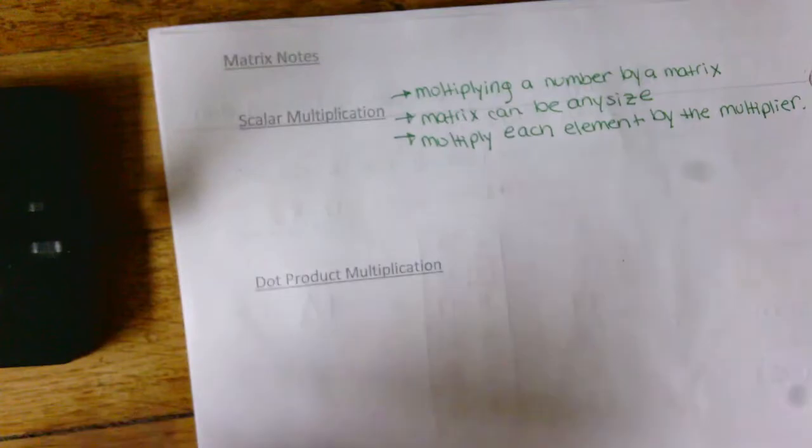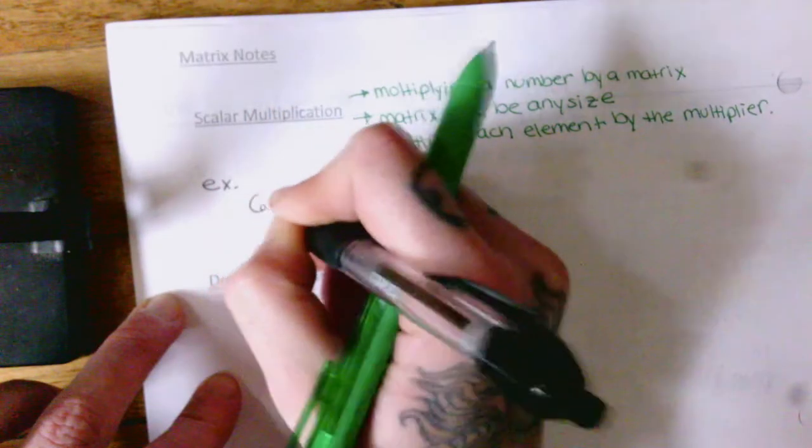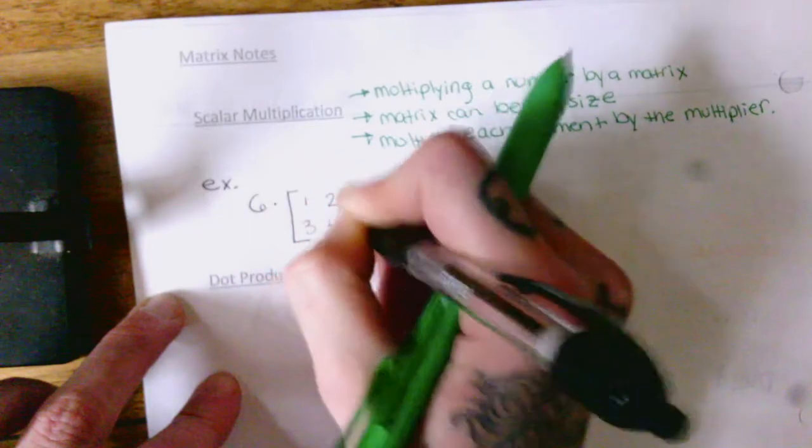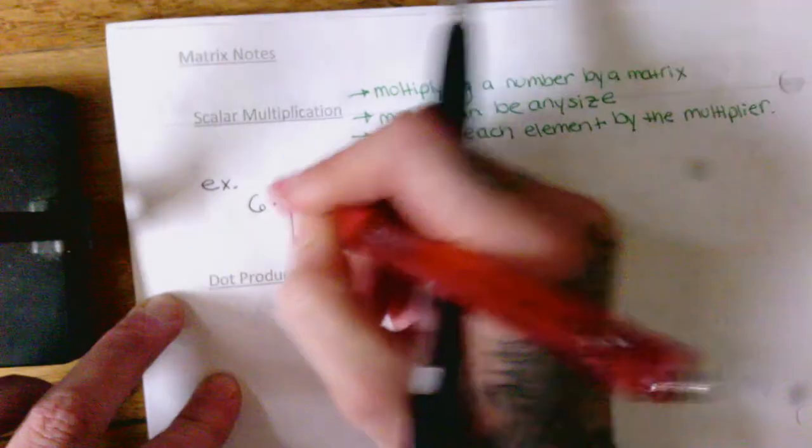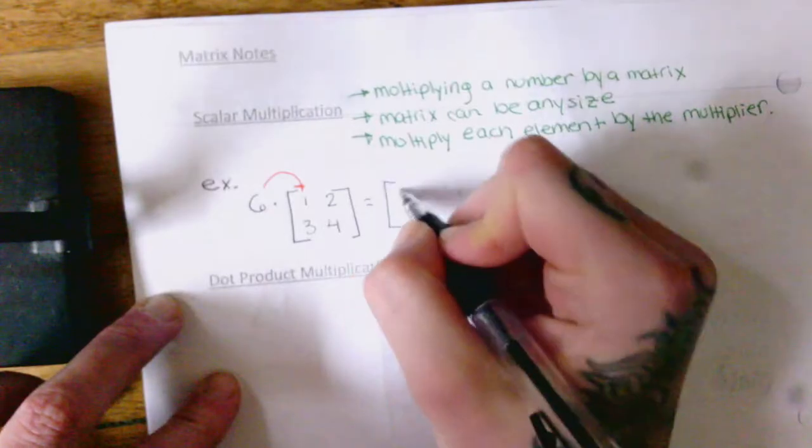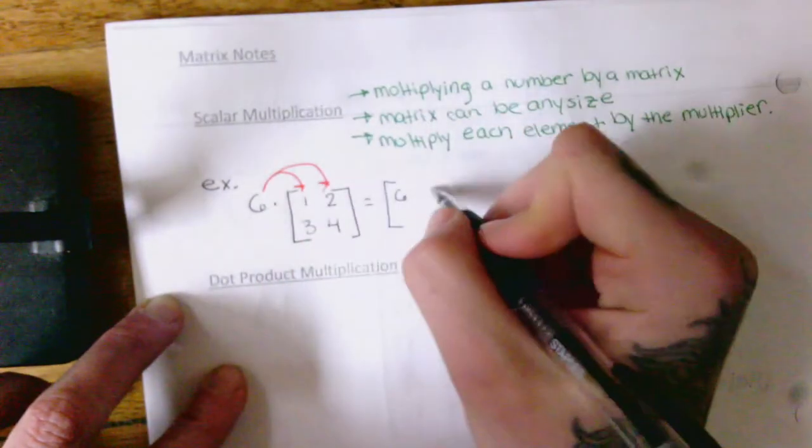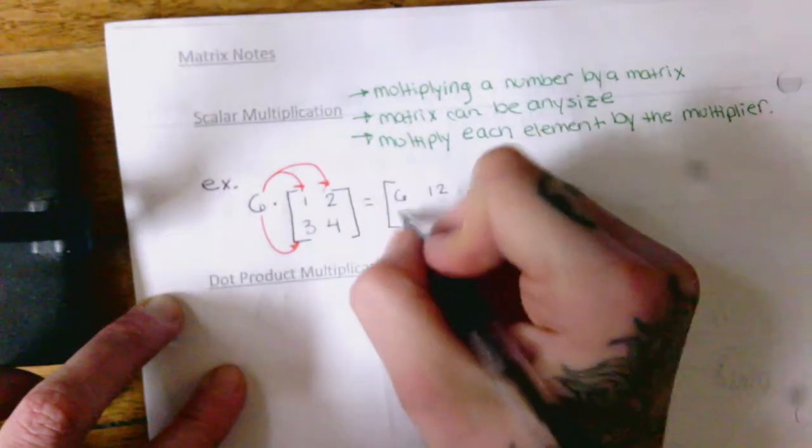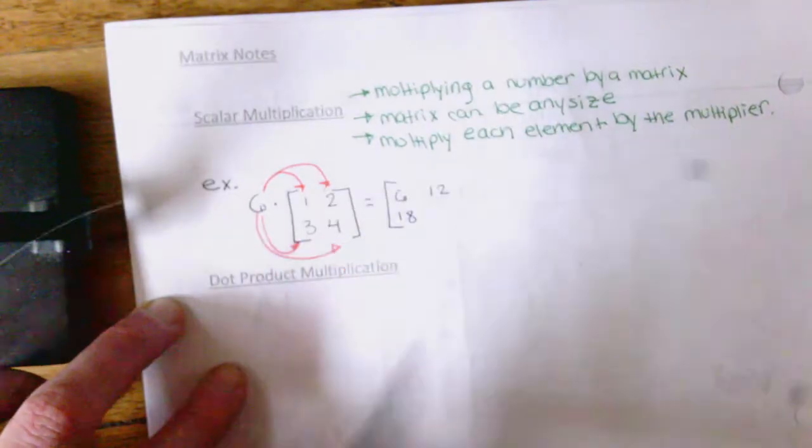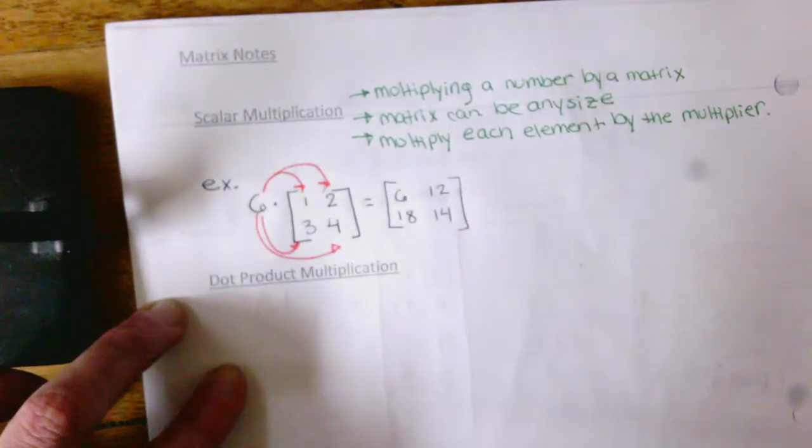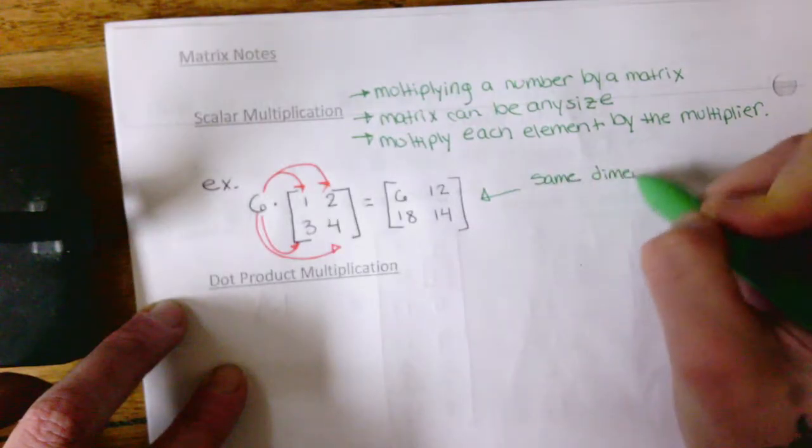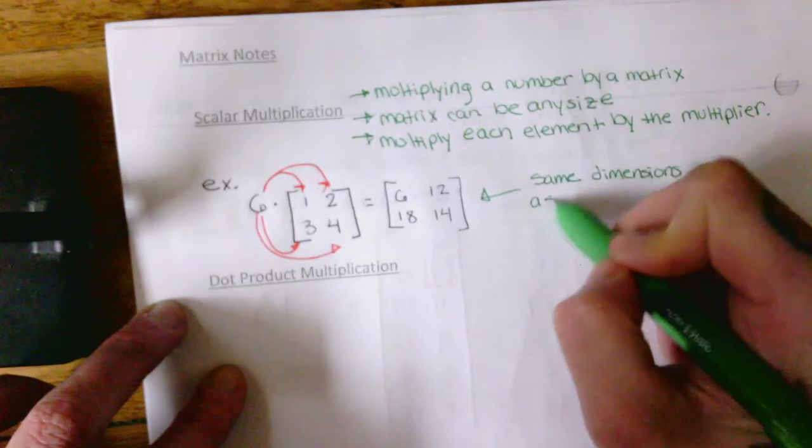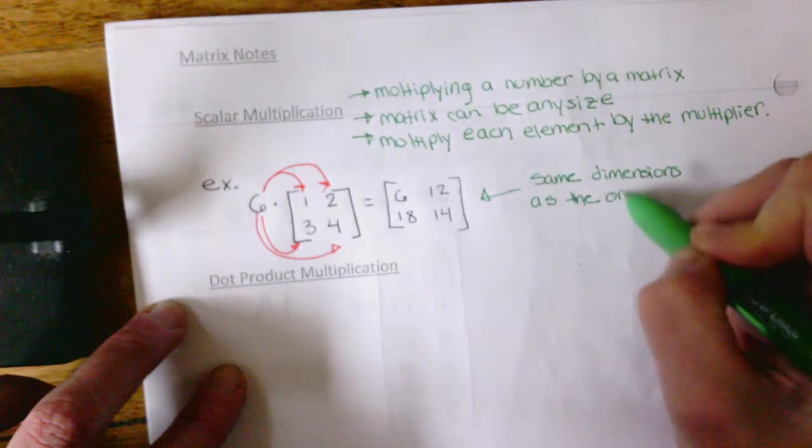Okay, so for example, let's say I have six times our basic matrix right here. So what I'm going to do is I'm going to multiply the six by the one and I get six. The six by the two. The six by the three. And the six by the four. Okay, so this has dimensions, same dimensions as the matrix, the original matrix we will say.